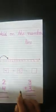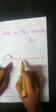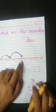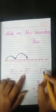First, I put my finger on number four and mark it. This is number five, so we jump five numbers after four: one, two, three, four, five. We draw one more line where we land. That number is nine. So four plus five equals nine.